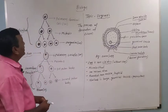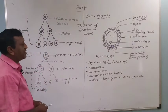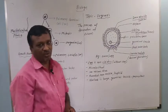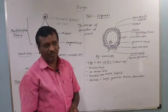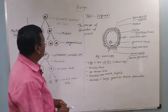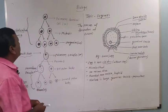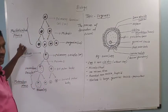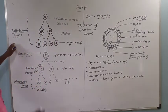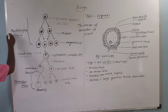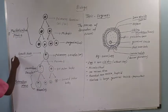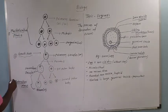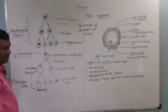The oogenesis process occurs inside the ovary. Oogenesis consists of three different phases: number one, multiplication phase; number two, growth phase; number three, maturation phase.